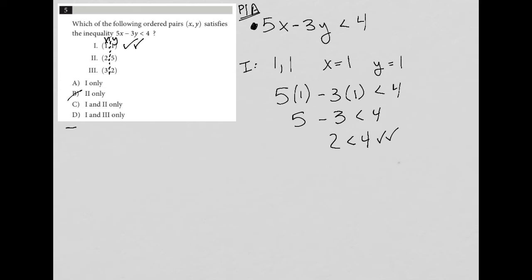Now let's check Roman numeral 2. Roman numeral 2 says that x equals 2 and y equals 5. Again, I'm just plugging these values in. So once again, I have 5x, but instead of x, I'm replacing it with 2. Minus 3y, but instead of y, I'm replacing it with 5. And again, I want to see if it's true that that's less than 4.